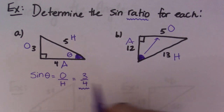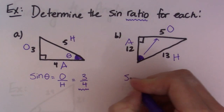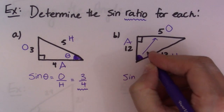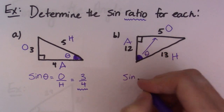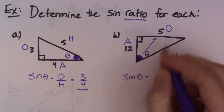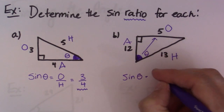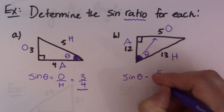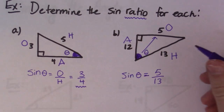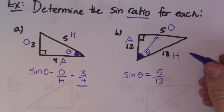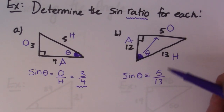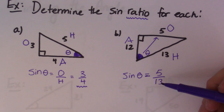So if we're going from this other angle, this becomes the opposite side and that becomes the adjacent side. Sine of theta is equal to opposite 5 over 13. There's the sine ratio for that triangle.